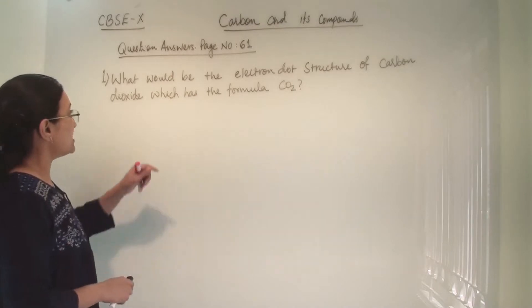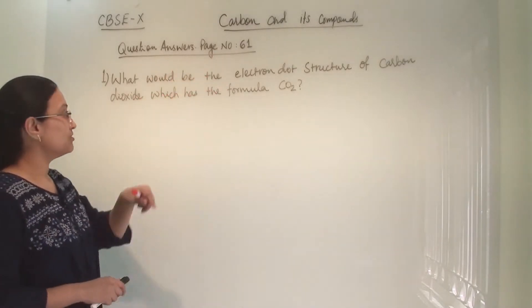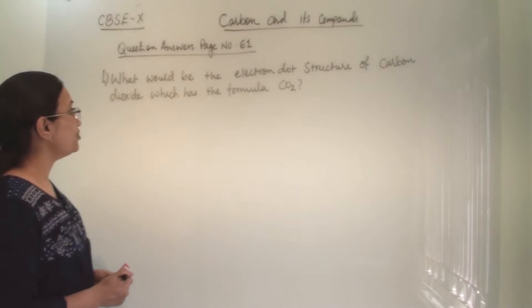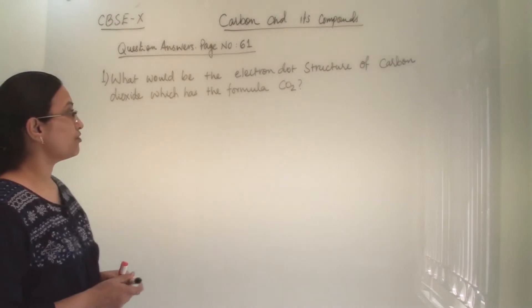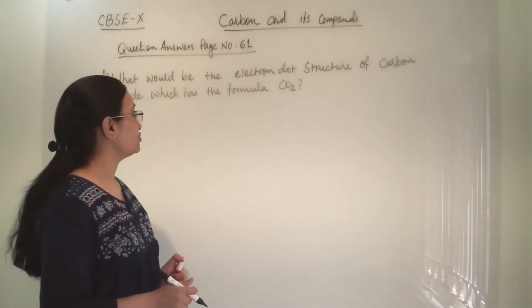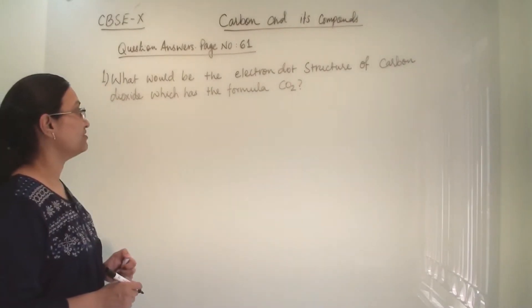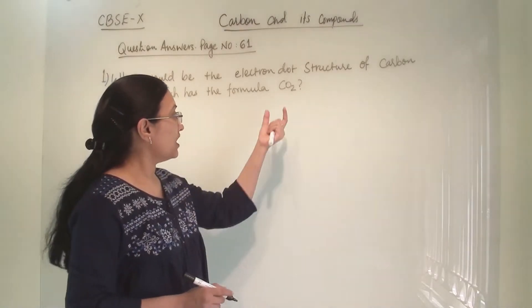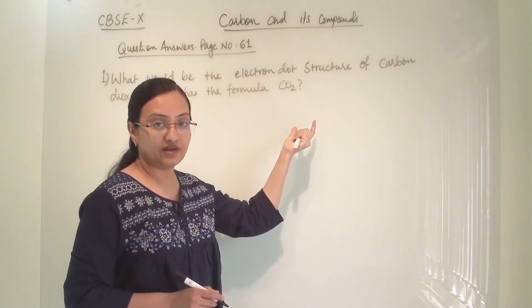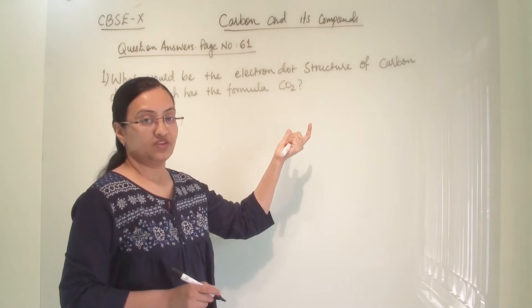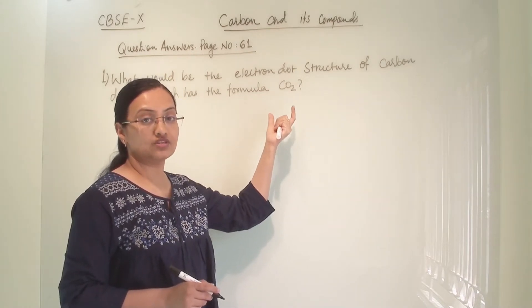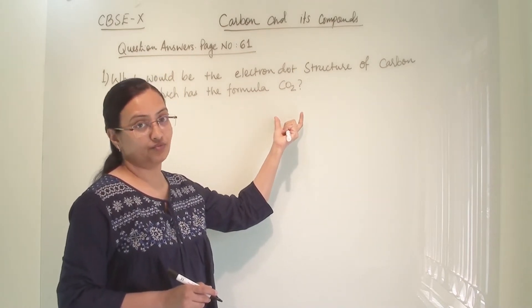We are solving question answers from page number 61. The first question is: what would be the electron dot structure of carbon dioxide, which has the formula CO2? Carbon dioxide is a covalent compound, so they will share the electrons and form the bond.